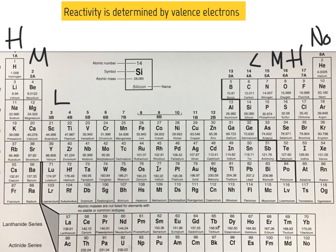Again, reactivity is going to be determined by your valence electrons. So if an atom has 1 or 7 valence electrons, it is going to be highly reactive. Those atoms are found in groups 1 and 17.